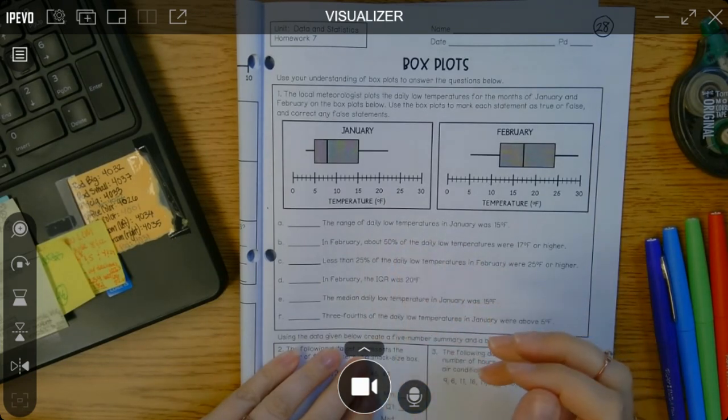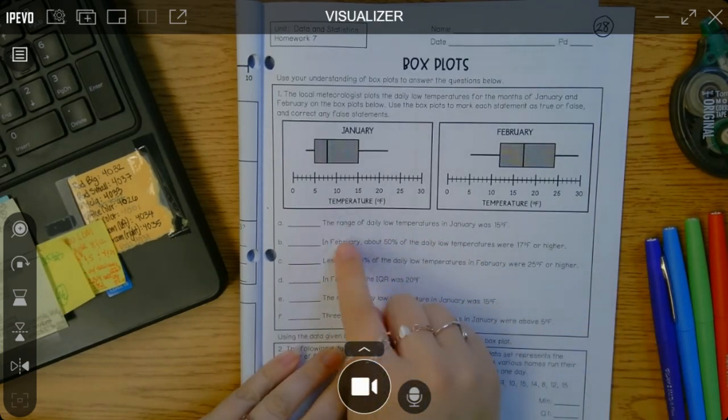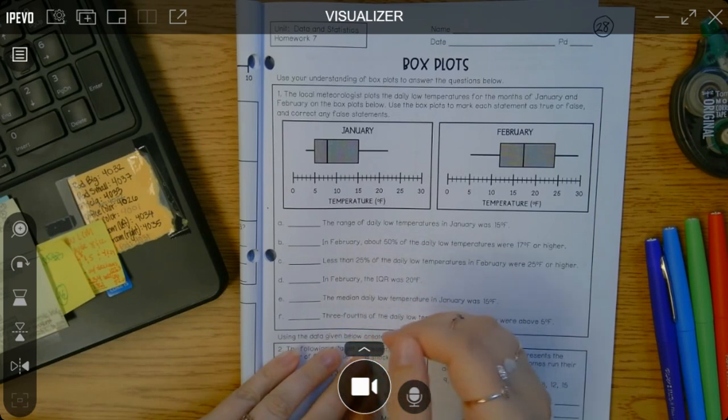like first of all, you actually should work it out and check it. And then if it's true, just put true. But if it's false, then correct it and put what would actually make it be true, okay? Put the correct answer.